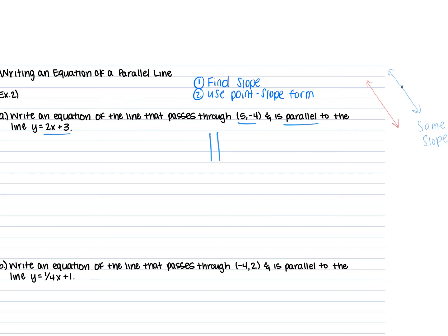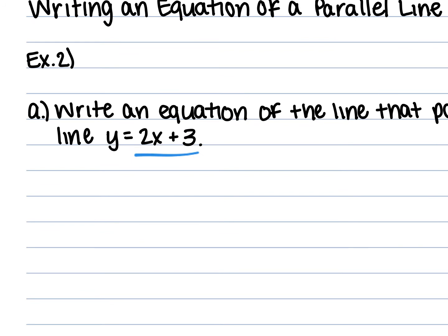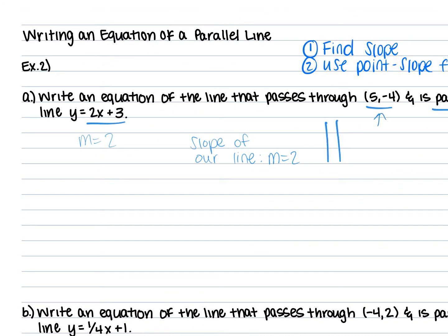Since they need to be parallel, let's find the slope of the original equation. The slope m equals two because it's already in y equals mx plus b. The slope of our new line also needs to be two — because the lines are parallel, the slopes have to be the same. We have the slope and a point, so we use point-slope form: y minus y1 equals m times x minus x1. We can't use slope-intercept form here because the given point is not a y-intercept.